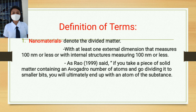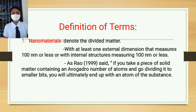Moving on to the definition of terms. The first term is nanomaterials, which denote divided matter — matters split into smaller pieces, with at least one external dimension that measures 100 nanometers or less, or with internal structures measuring 100 nanometers or less. As Aroun (1999) said: if you take a piece of solid matter containing an Avogadro number of atoms and go on dividing it into smaller bits, you will ultimately end up with an atom of the substance.